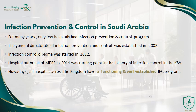Infection prevention and control in Saudi Arabia has evolved significantly. For many years, only few hospitals had an IPC program. The General Directorate of Infection Prevention and Control was established in 2008, and the infection control diploma started in 2012. The first hospital outbreak of MERS was in 2014, which became a turning point in the history of infection control in the Kingdom. Nowadays, all hospitals across the Kingdom have a functioning and well-established IPC program carried out by professional and competent practitioners.